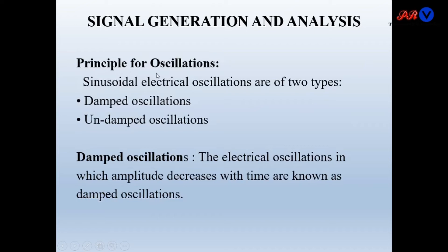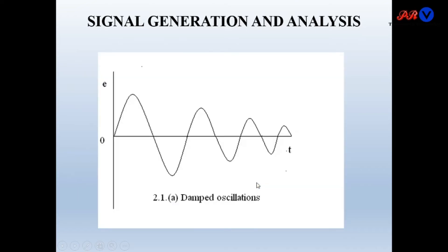The principle of oscillations: sinusoidal electrical oscillations are of two types — damped oscillations and undamped oscillations. In damped oscillations, the amplitude decreases with time while the frequency remains the same. This decrease in amplitude is due to the loss of energy in the system producing oscillations.